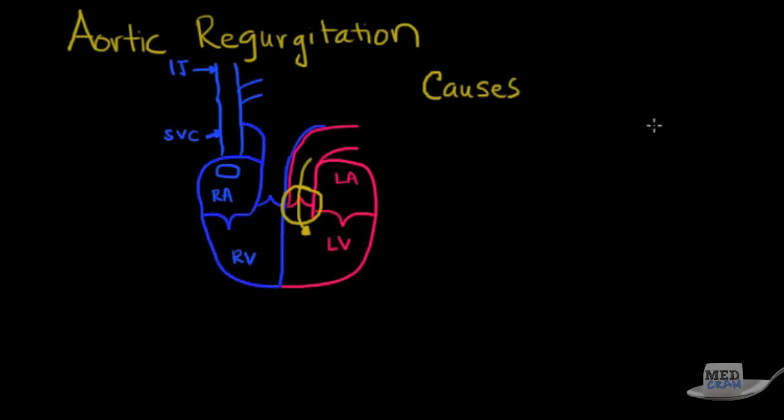In terms of causes you can break it down into those less than 50 and those greater than 50. Those less than 50 that have aortic insufficiency are usually due to post-inflammatory. Those after the age of 50 have usually to do with aortic root dilatation.